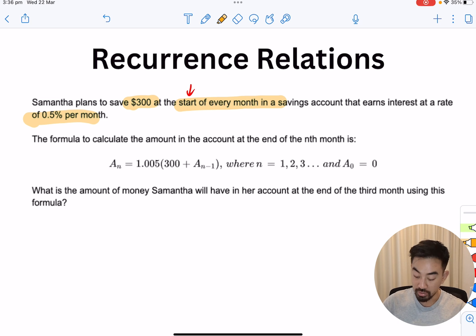The formula to calculate the amount in the account at the end of the nth month is given by this formula here where n obviously represents months and A0 equals $0. What is the amount of money Samantha will have in her account at the end of the third month using this formula? Alright, so before we get into it, you've done this before but what you're used to is using a future value table or a present value table to do these calculations and what we're kind of doing is doing it by hand and using a formula known as a recurrence relation.